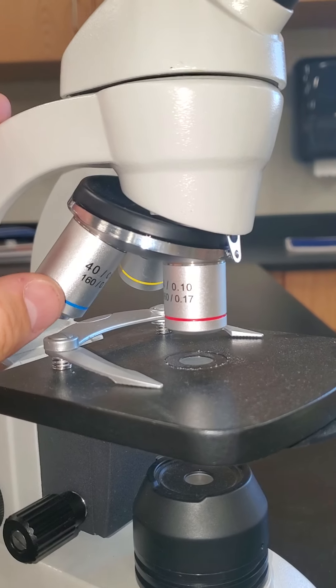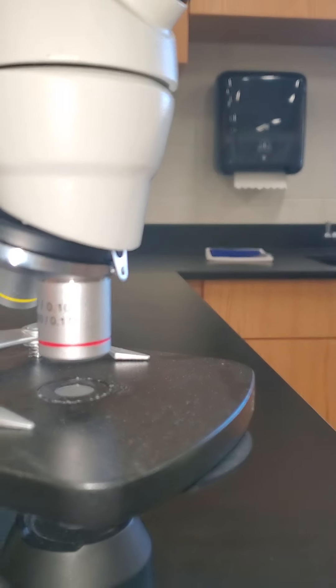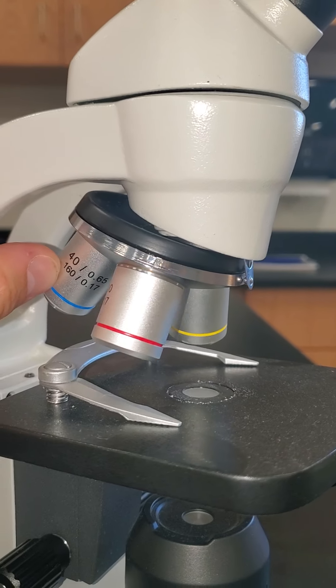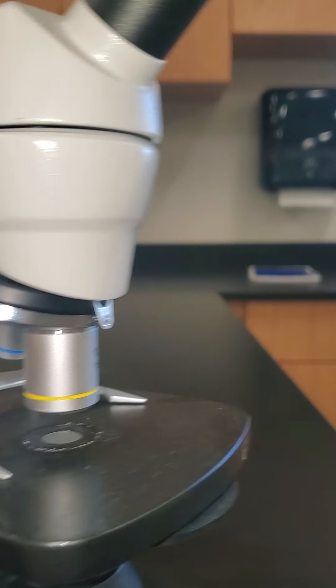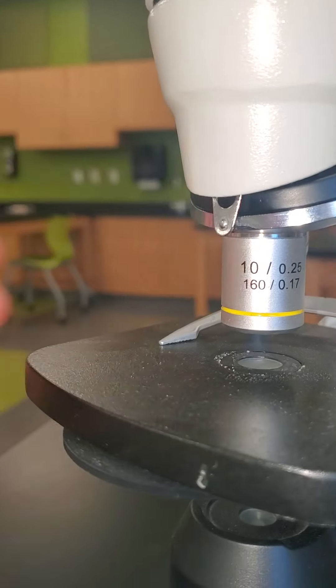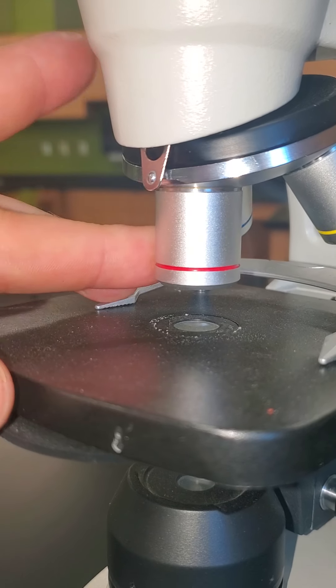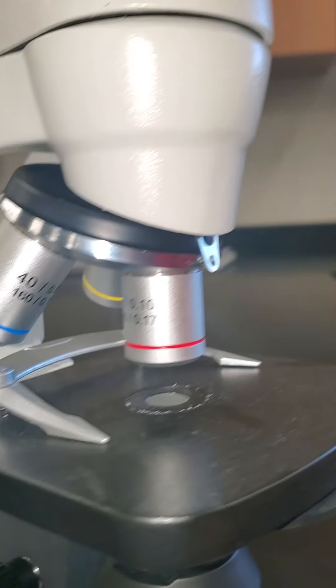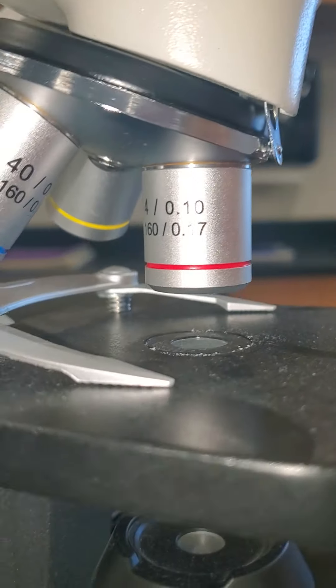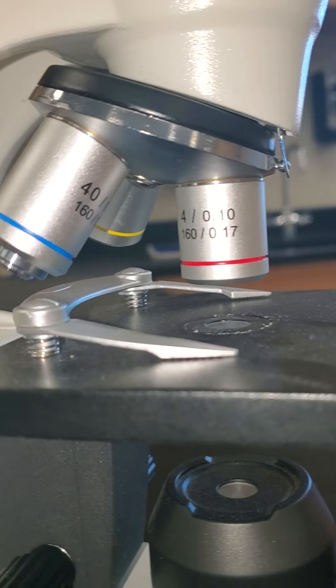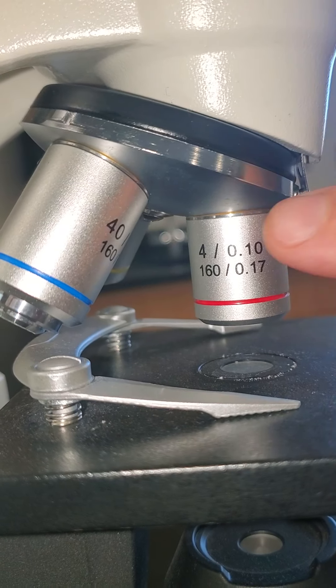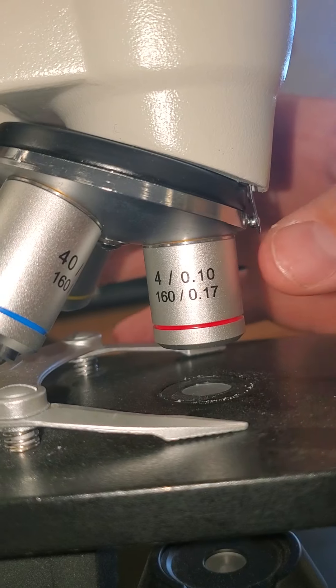It is three lenses with different powers on a rotating wheel. At certain angles you can actually see that it shows the magnifying power of these lenses. Red being the least magnified, four times magnification.